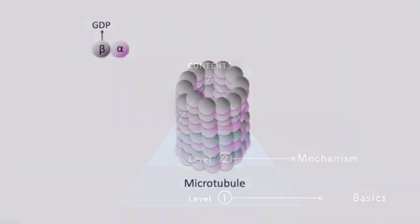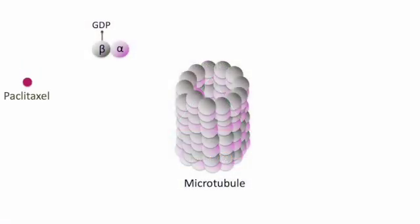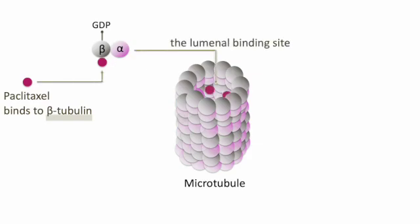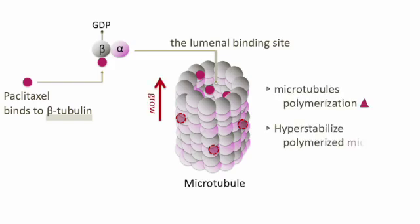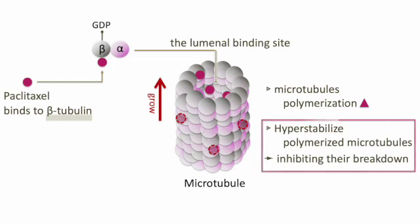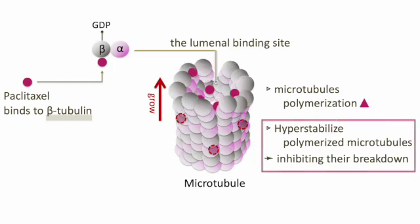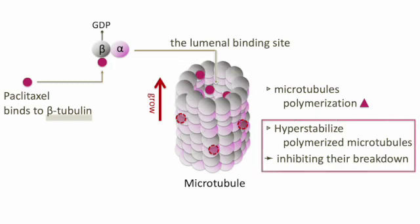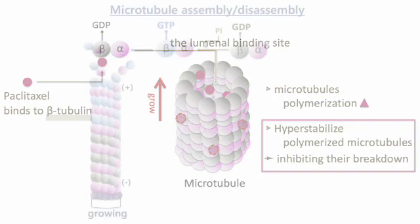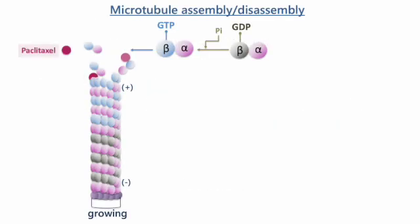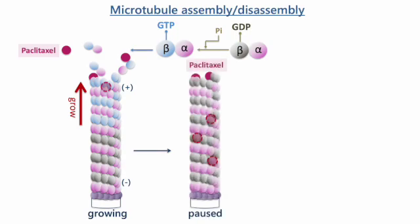Paclitaxel, belonging to the taxanes, binds to the inner surface of microtubules in proximity to the nucleotide binding site on beta tubulin, driving microtubule polymerization and promoting excessive stabilization of microtubules, leading to inhibiting their breakdown. Paclitaxel binds to the beta subunit of tubulin in microtubules, promoting hyperstabilization of microtubules.